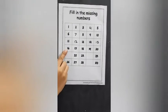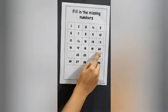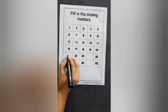16, 17, 18, 19, 20. What comes after 20? 21.